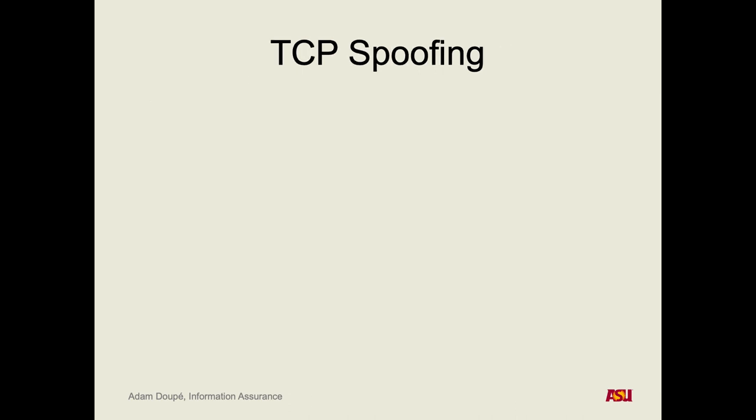Just like with UDP, we could spoof a UDP packet by sending the packet and setting the source IP as somebody else's. The packet gets there fine; the other server has no way of knowing the IPs are different. So how does that story change with TCP?